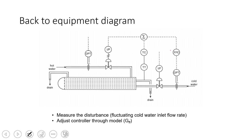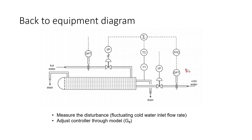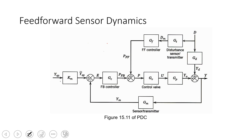Going back to the equipment diagram, we implement a feedforward controller using a flow transmitter to measure the cold water flow coming in as the disturbance. That signal feeds directly into the temperature controller, adding a feedforward component to the PID controller. Alternatively, the feedforward and feedback signals are summed and sent to the valve. Sensor dynamics can also be included as a transfer function if needed.